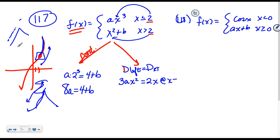These have to be equal at x equals 2. So that means 3A times 2 squared will have to be equal to 2 times 2, giving me 12A has to be equal to 4 and an A of 1/3.